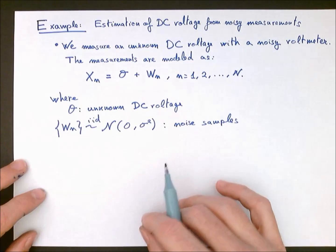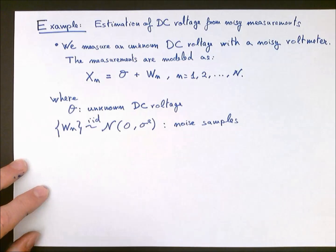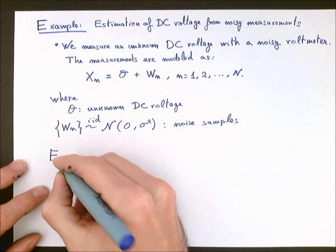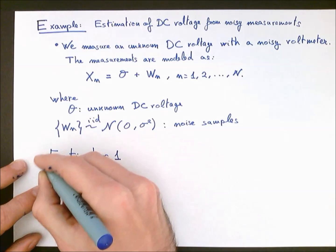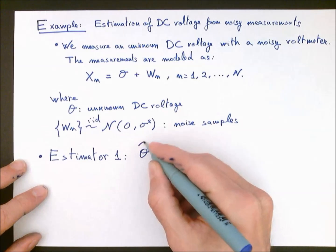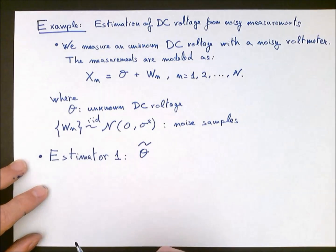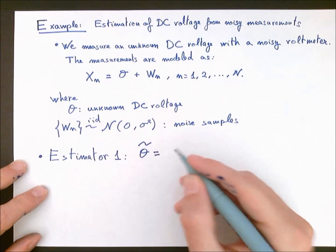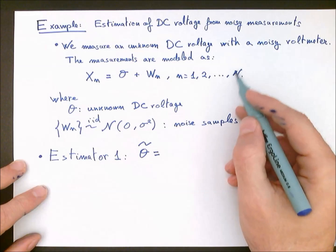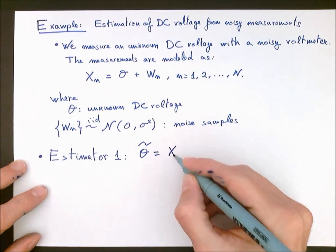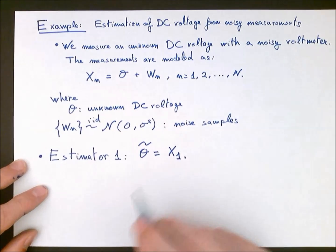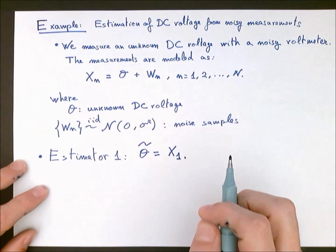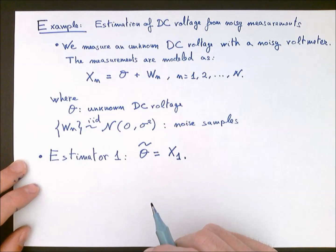In this setup, we can think of a couple of estimators, and we are going to define two of them. Our first estimator, which we will call Estimator 1 and denote as theta with a tilde, is a very simple estimator: of all the N measurements that we have, we guess that the value of the DC voltage is just the first measurement. This is probably not a very good estimator, but we will evaluate it when we compute its bias and MSE.